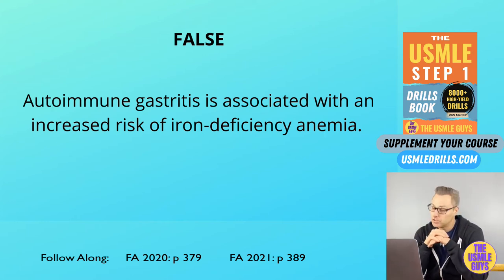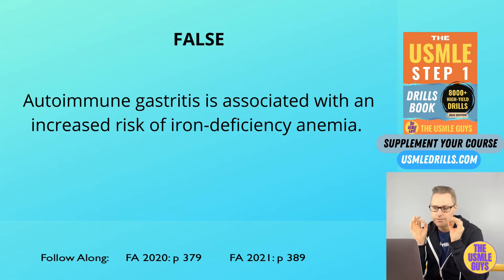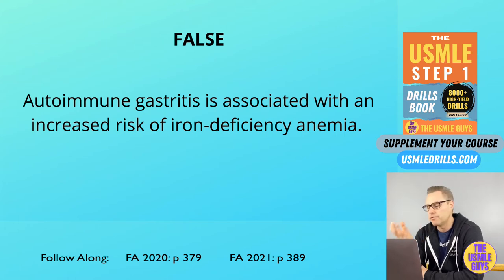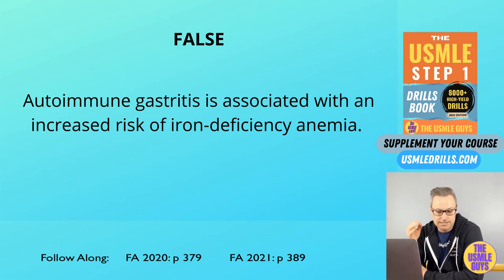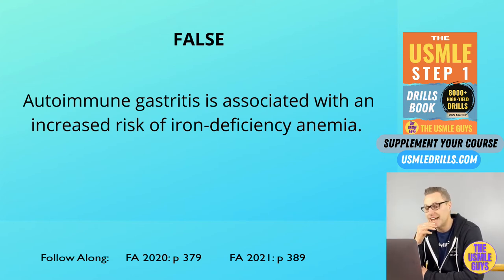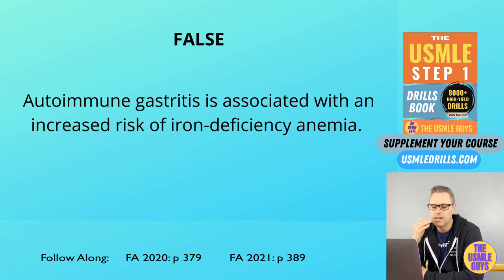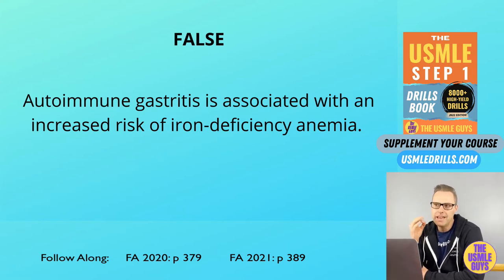Gastric cancer is going to present with abdominal pain, early satiety, and weight loss. In addition to those findings, patients sometimes develop acanthosis nigricans and the sign of Leser-Trélat, which is simply the acute appearance of multiple seborrheic keratoses. Another important physical finding is Virchow's node — a hard nodule found behind or superior to the left clavicle, indicative of metastasis from stomach cancer.